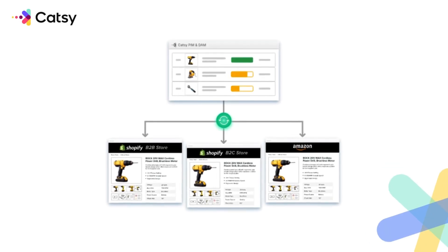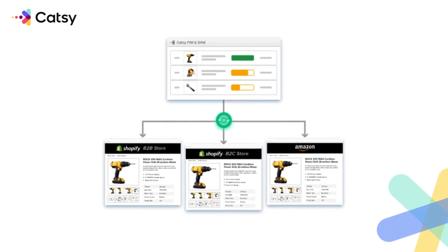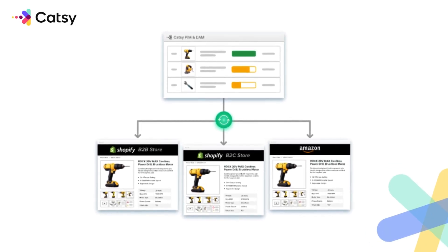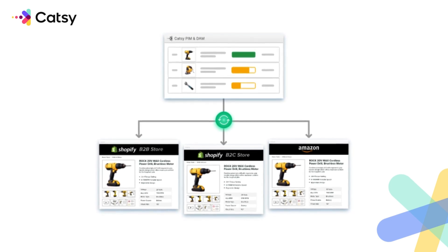Next, let's talk about your digital assets. Product images, videos, and marketing collateral are just as important as the product data itself. With CATSEA's DAM system, you can store, organize, and sync all of your digital assets alongside your product data — and not just alongside, you can link your product assets directly to your product information.